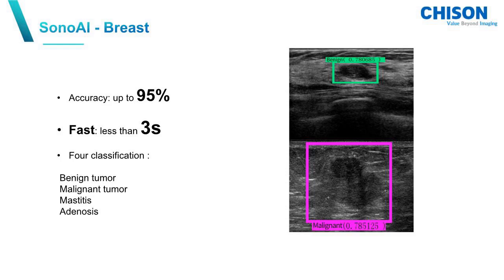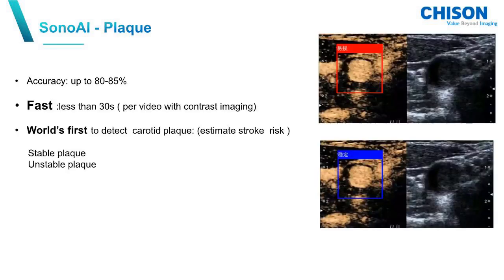SonoAI Breast has 4 classifications: benign tumor, malignant tumor, mastitis, and adenosis. The accuracy of this technology is also very high — between 80 to 85% — and results are delivered in less than 30 seconds.